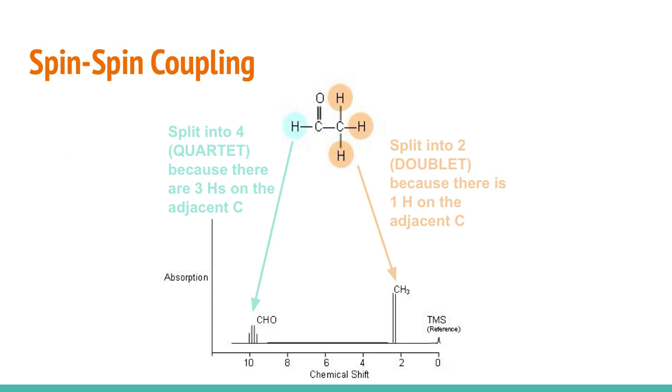In this example here, this proton is in one chemical environment, and we get a quartet showing on a high resolution NMR spectrum. It's split into four or quartet because if we look at the adjacent carbon, we're looking at this proton attached to this carbon, but if we look at the adjacent carbon, it's attached to three hydrogens on that adjacent carbon. So that's causing it to split into four peaks.